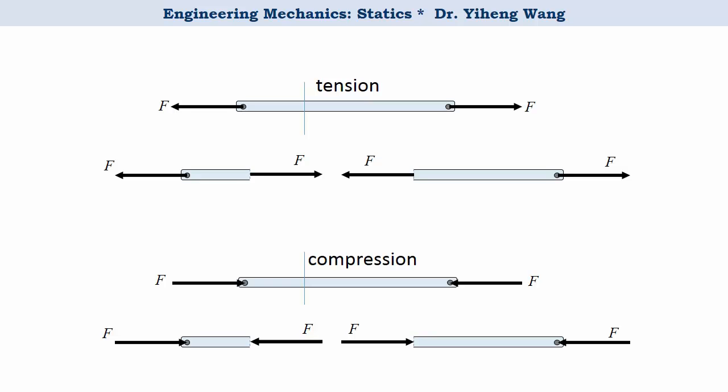Since if you recall, one 2D rigid body free body diagram enables us to solve for a maximum of three unknowns, so if we only need to solve for the forces in no more than three truss members in the structure, we can imaginarily cut the structure open and apply rigid body equilibrium analysis. This is known as the method of sections.